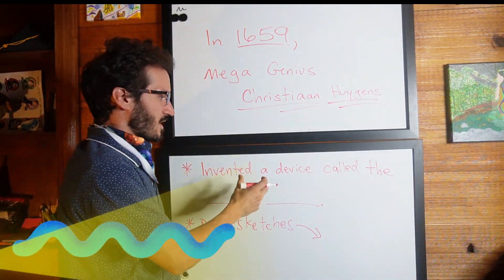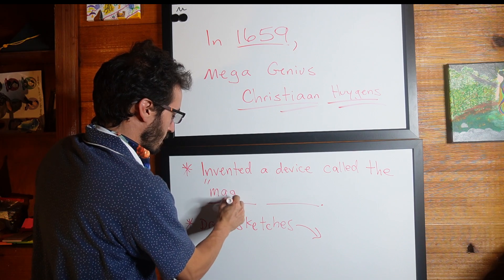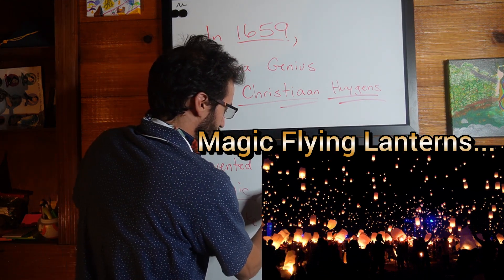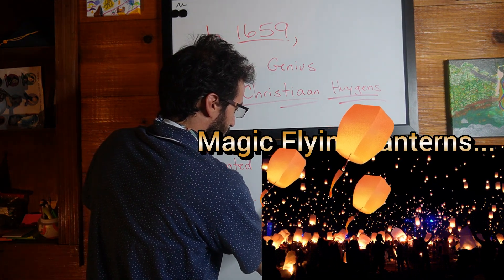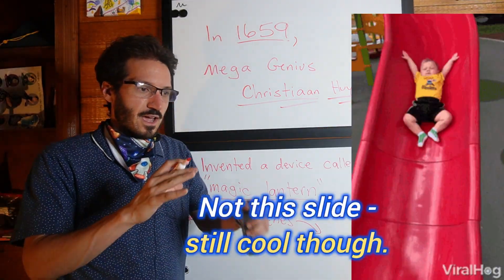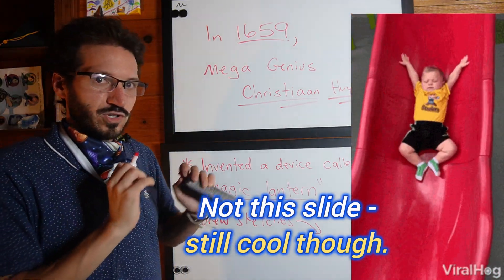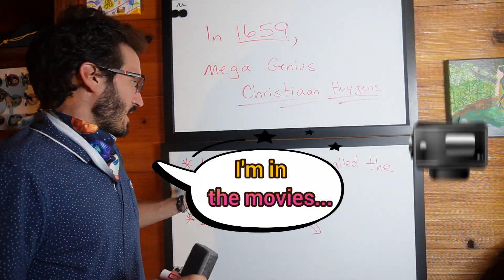He invented a device that he dubbed the Magic Lantern, which is a pretty cool name for his tidy little invention. It had a lens on it, and you could put little slides or images in this thing and it would project out.